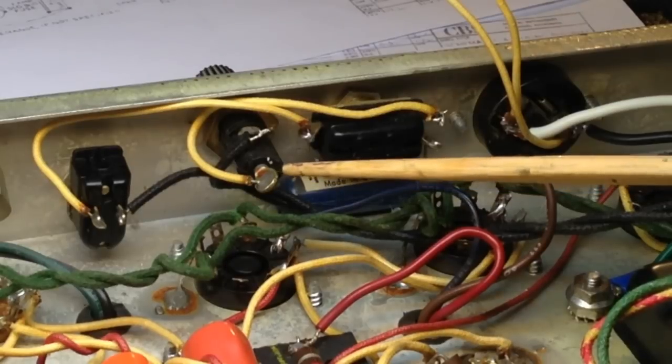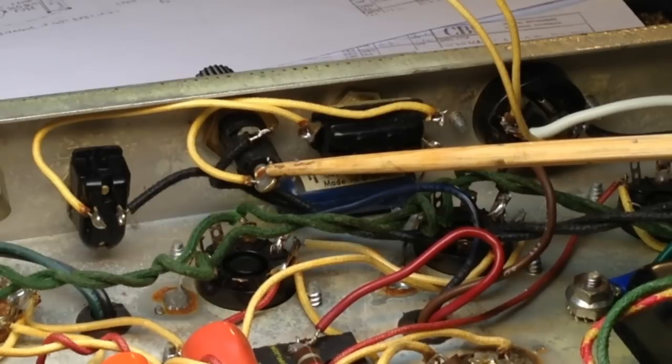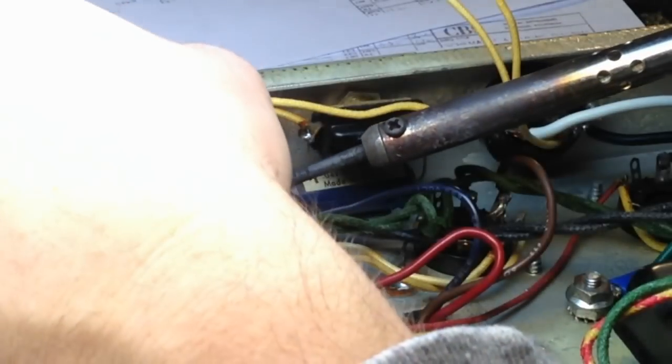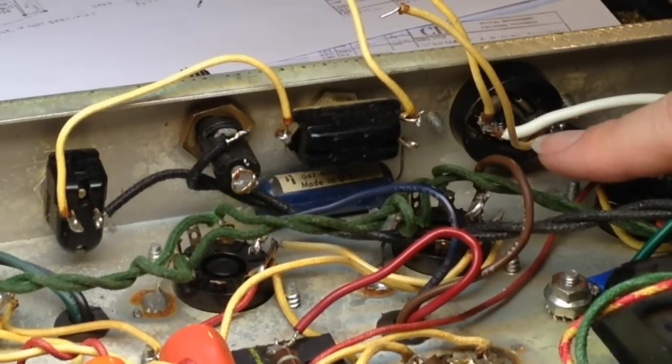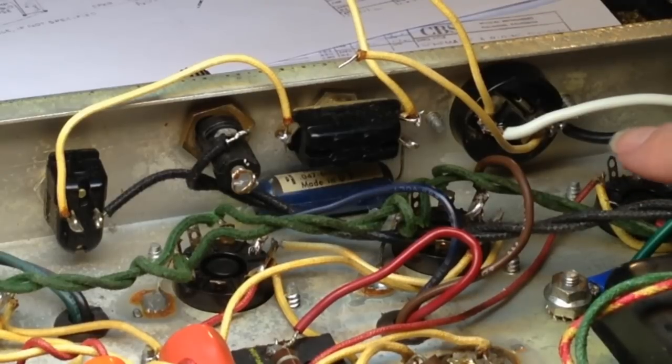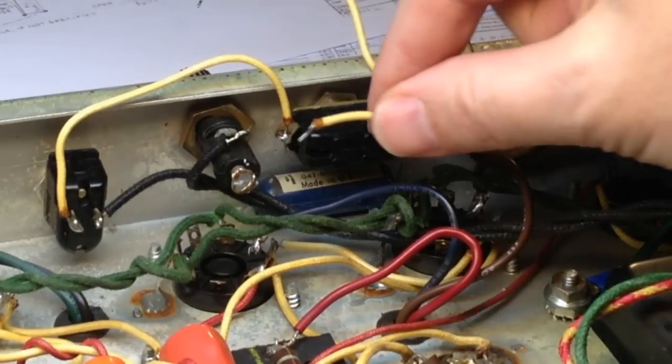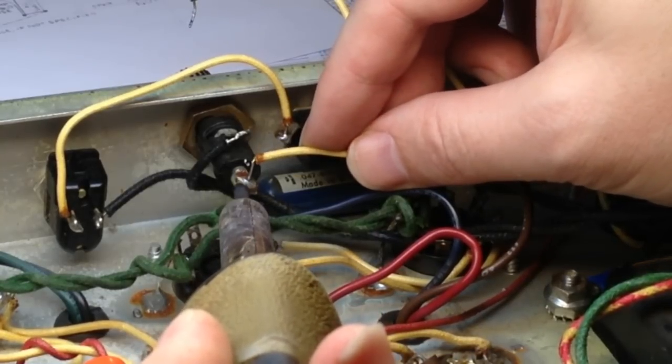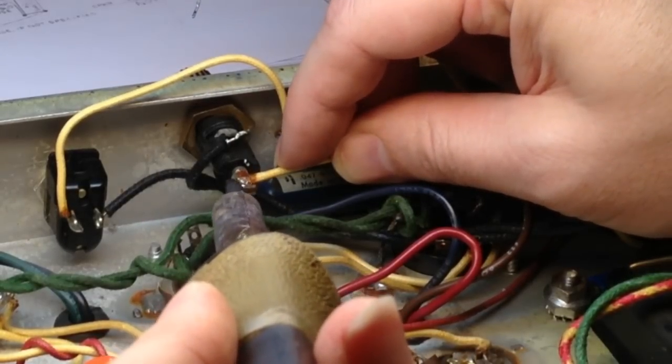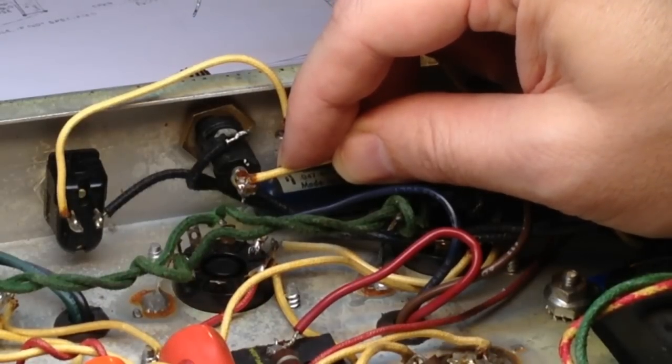The next thing we want to do is we want to desolder this wire from the tip of the fuse socket. And we will take the wire coming in from our hot lead. And again, that's the black lead. So find the wire that's attached to the black lead coming in. And that one is going to go right there in its place. So let's go ahead and solder that in. Make sure the connection is nice and secure.